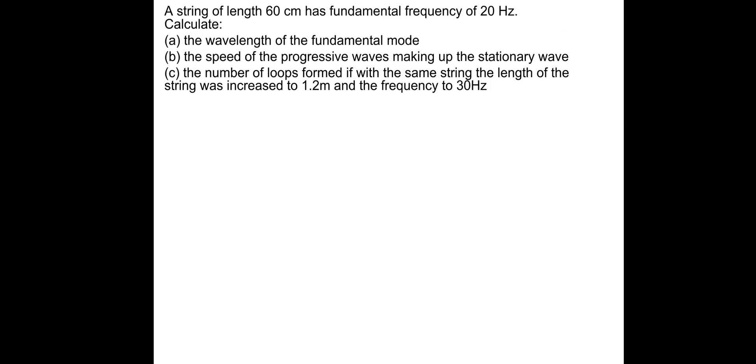So let's have a go at this one. So let's pause and have a go. A string of length 60 centimeters has fundamental frequency of 20 hertz. Calculate the wavelength of the fundamental mode. So remember, the fundamental mode or the fundamental frequency is where there is just one half loop. So the string is length 60 centimeters, so this is 0.6 meters. So what would the wavelength be? Well the wavelength, obviously, twice that. So 0.6 times 2, it's 1.2 meters.